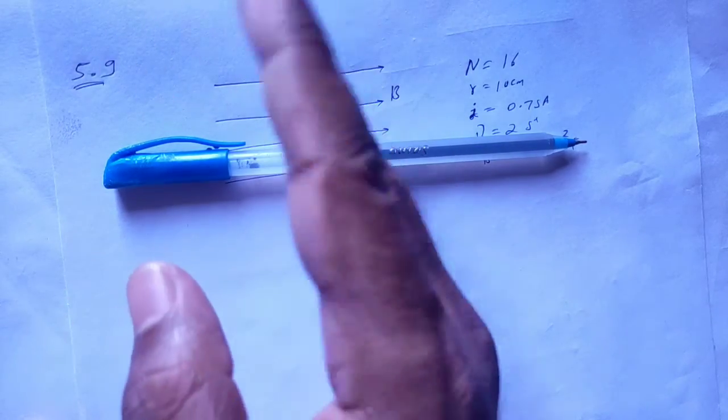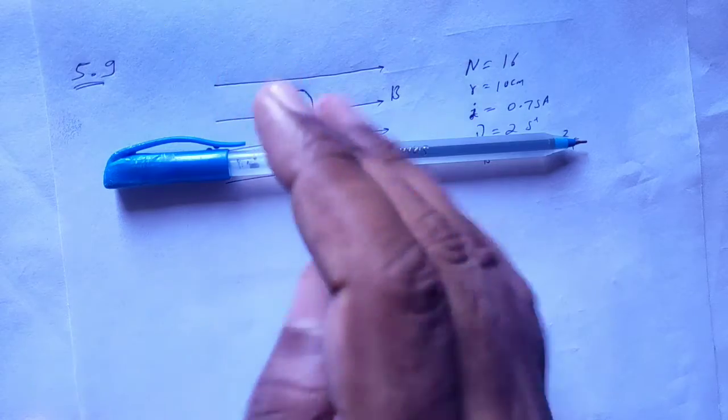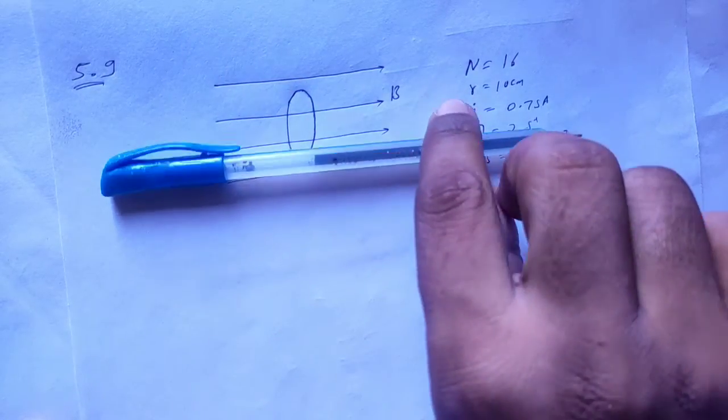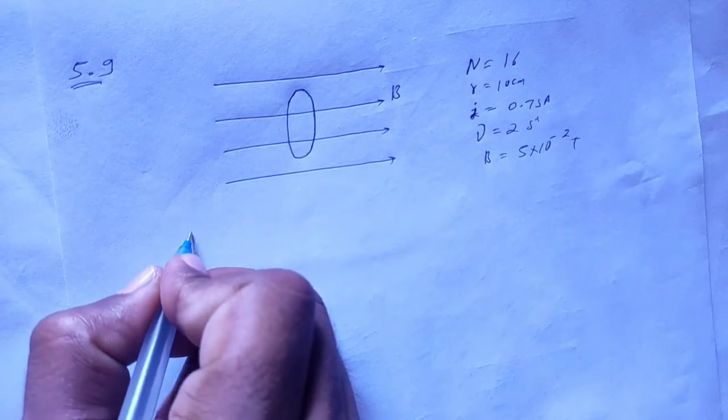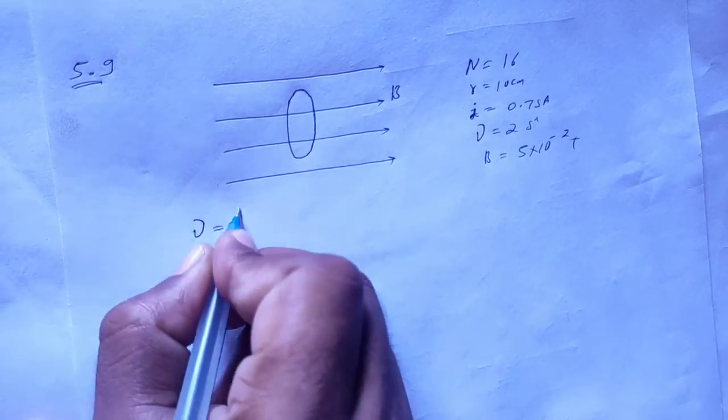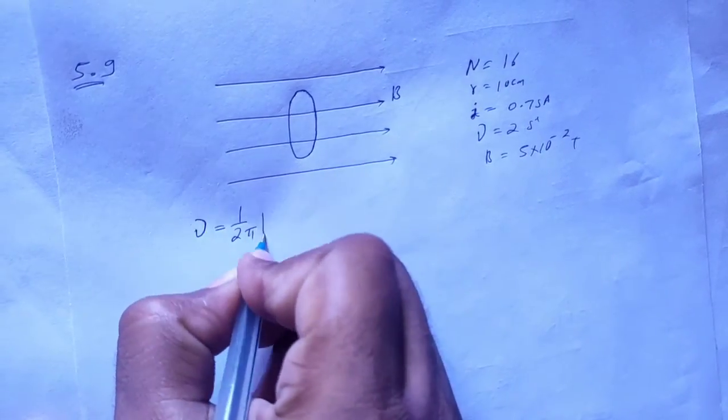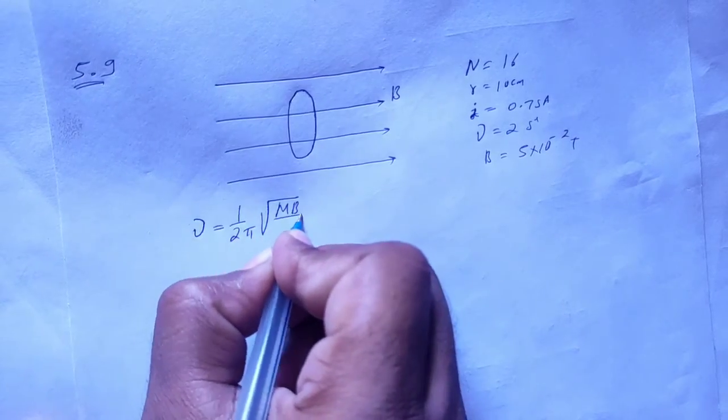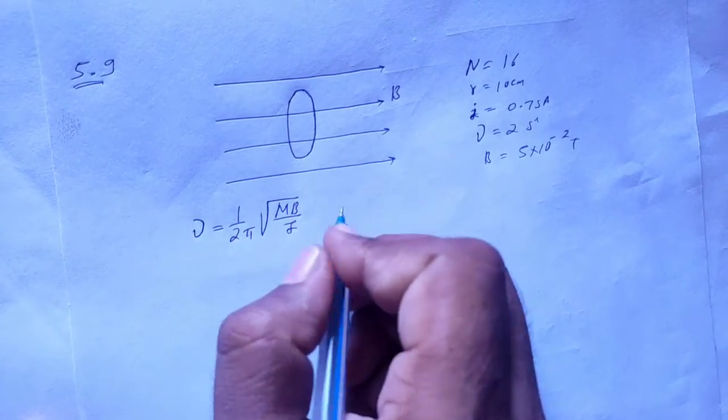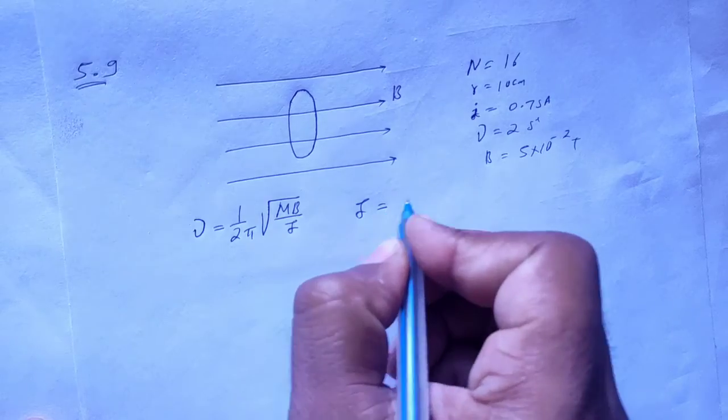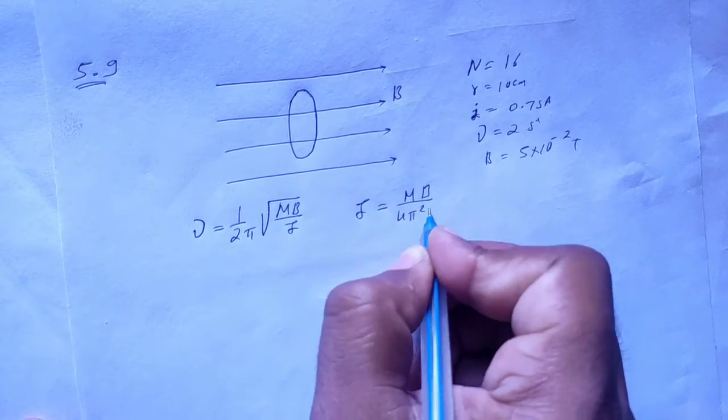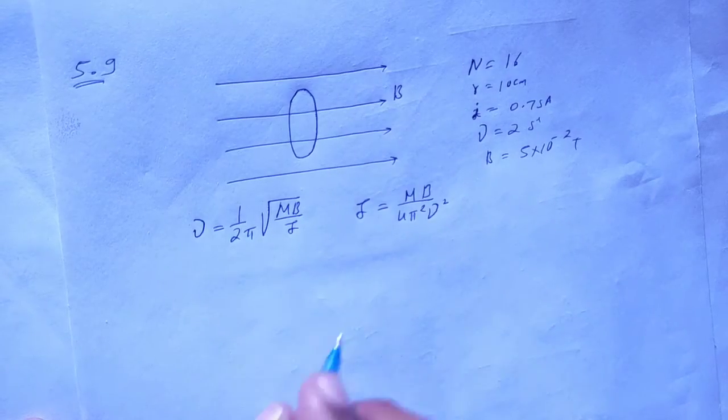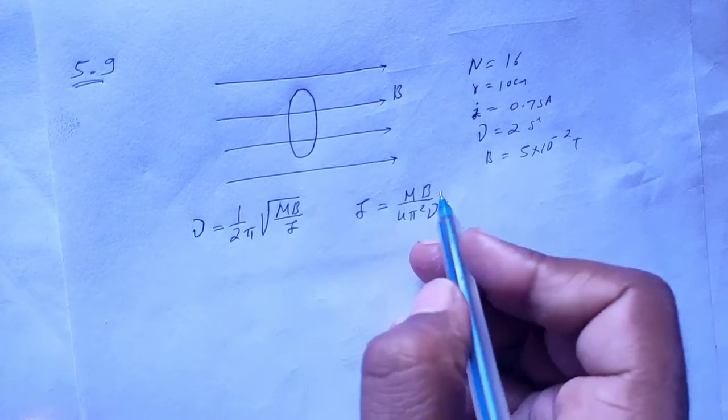So the moment of inertia will be found from the frequency. If I rearrange the formula for moment of inertia I, then it will be mb upon 4 pi square into the frequency square. This is my moment of inertia.